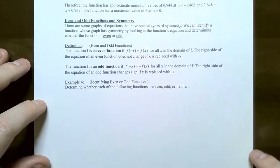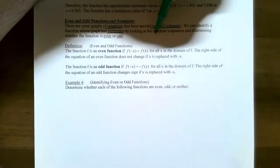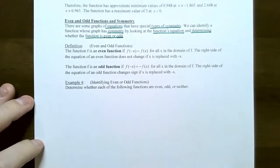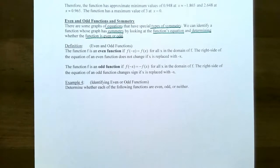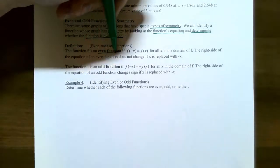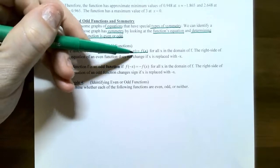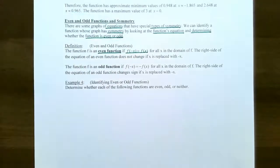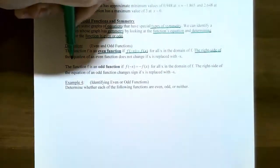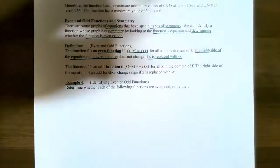Let's look at even and odd functions and what it means in terms of symmetry. There are some graphs of equations that have symmetry based on the function's equation and determining whether the function is actually even or odd. Now that has nothing to do with even number or odd number — it's a property involving functions. A function is even if you replace all the x's with negative x and you get the exact same function as before for all the x values in the domain. If the function stays the same whenever you replace x with negative x, then the function is an even function.